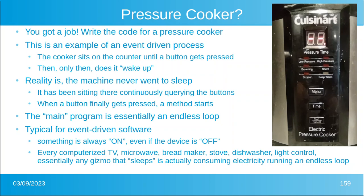You're writing for Cuisinart, and this is an example of an event-driven process. The cooker just sits on the counter until somebody presses a button, then it wakes up. The reality is that the machine never actually goes to sleep — it's been sitting there continuously doing an endless loop, querying the buttons to see if anybody pushed them. This is typical for event-driven software.